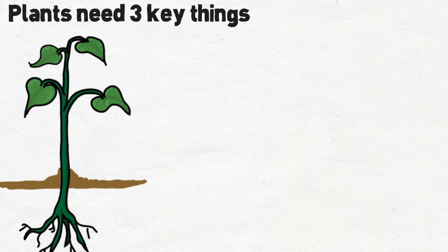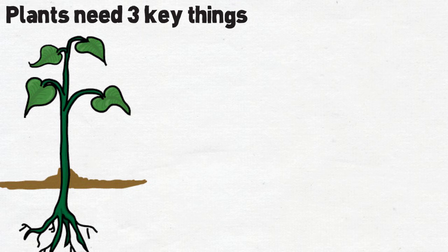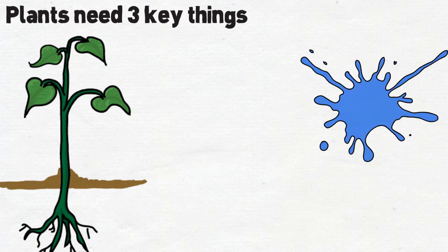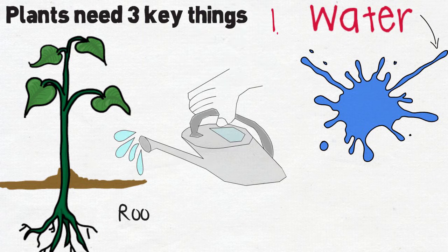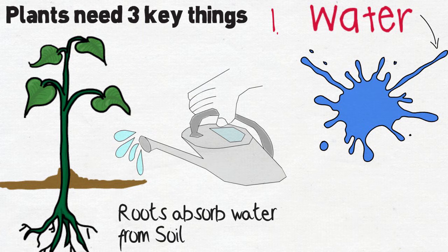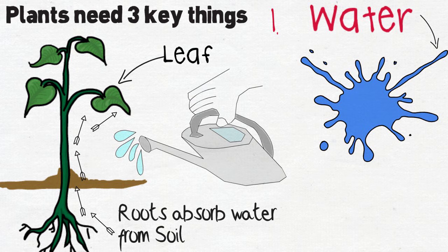Plants need three things to make food. The first, you guessed it, is water. When you water a plant, its roots absorb water from the soil. The water is then passed on to the stem, which in turn passes it on to the leaves of the plant.